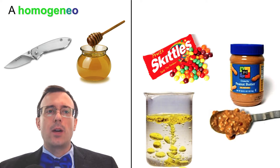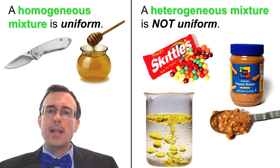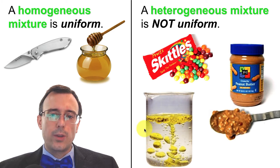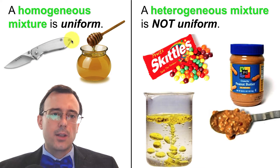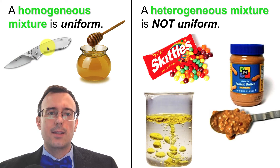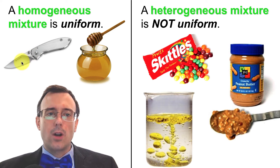A homogeneous mixture is uniform throughout, whereas a heterogeneous mixture is not uniform. Both types can be any state of matter. Typically when people think of mixtures, they think of liquids like honey or oil and water mixed together, but mixtures can also be gases or solids. For example, a stainless steel knife — stainless steel is an alloy, which is itself a homogeneous mixture. You can tell it's homogeneous because that metal is all the same throughout the entire material.